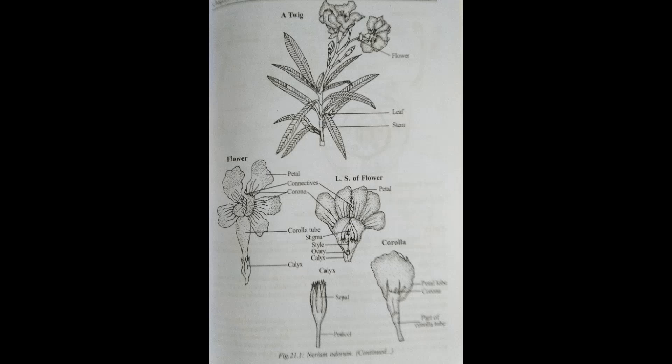Hello students, in this lecture I am going to discuss about the family Apocynaceae. First, the systematic position of Apocynaceae: class Dicotyledons, subclass Gamopetalae, series Bicarpellatae, order Gentianales.